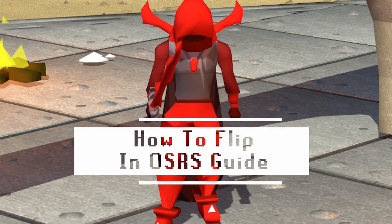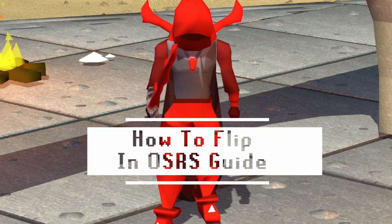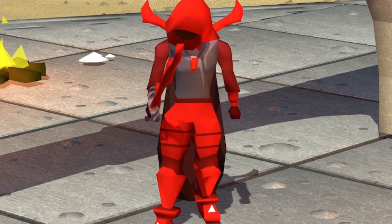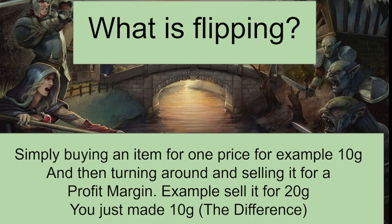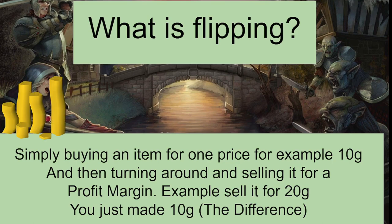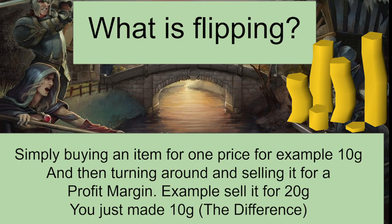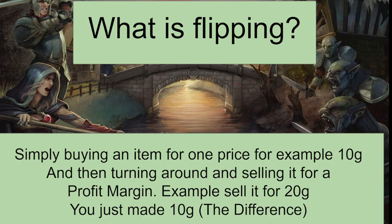Hey there, I'm going to show you everything you need to know to get started flipping in Old School RuneScape. We're going to start with a basic definition. What is flipping? It's simply buying an item for one price — for example, 10 gold — and then turning around and selling it for a higher price. That's your profit margin. So if you sell that item you bought for 10 gold for 20 gold, you just made 10 gold profit.